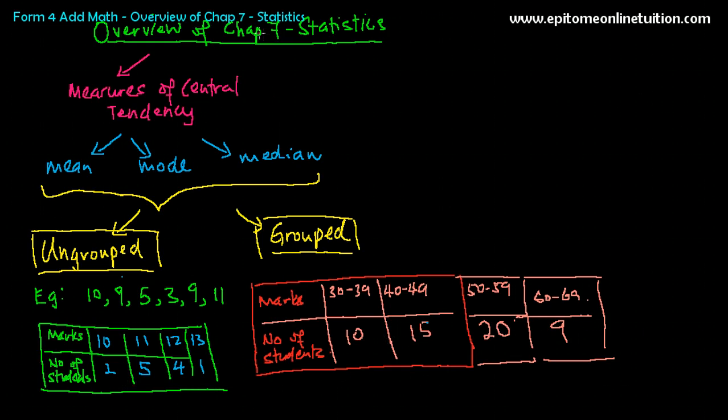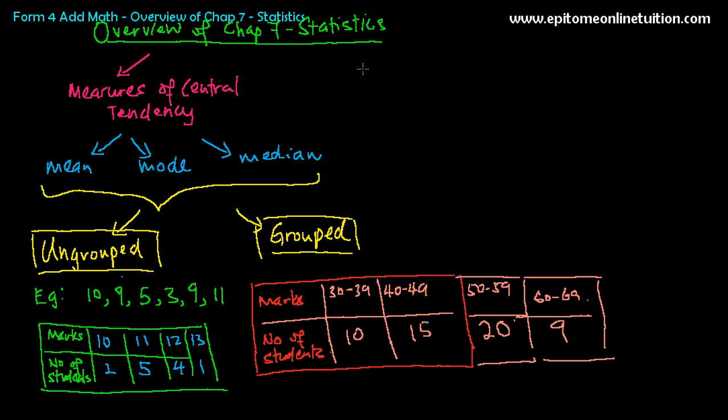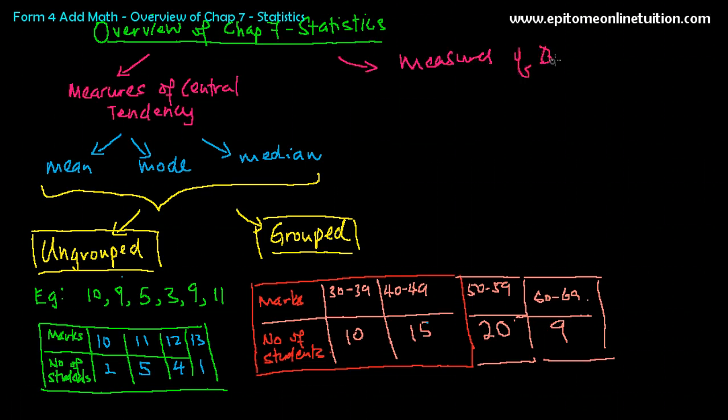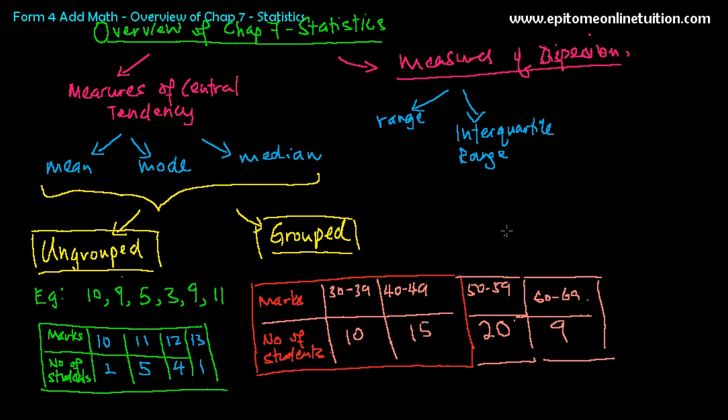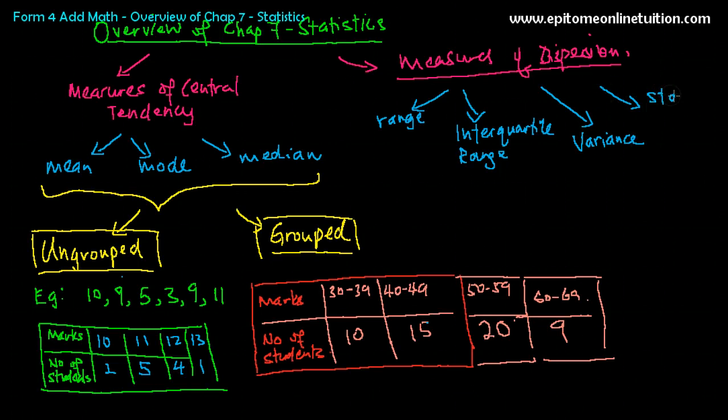That's Measures of Central Tendency. Now, the next thing that you will be learning in Chapter 7, there are only two subtopics, two parts. The next thing that you will be learning is called Measures of Dispersion. Measures of Dispersion stands for four things: the first is Range, and then Interquartile Range, and the next one is Variance, and the other one is Standard Deviation. There are a lot of formulas here. Four things, these are called Measures of Dispersion. The way you find them is similar to Mean, Mode, and Median, just that you use different formulas.